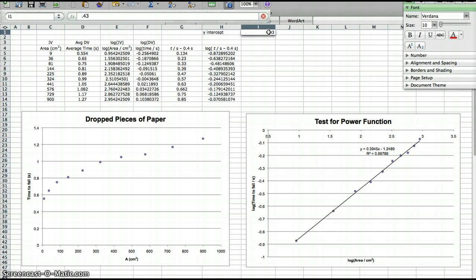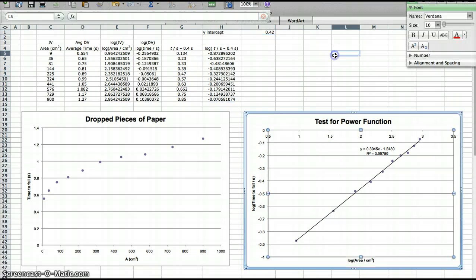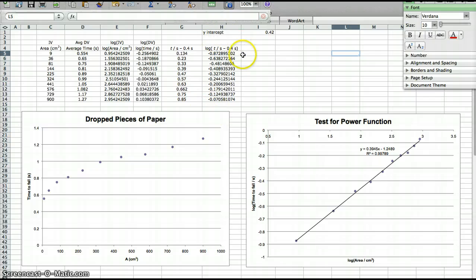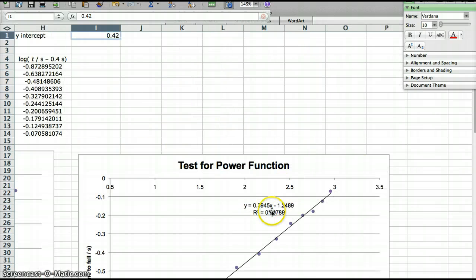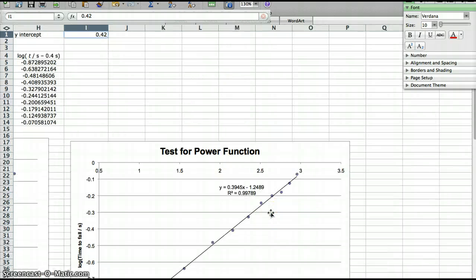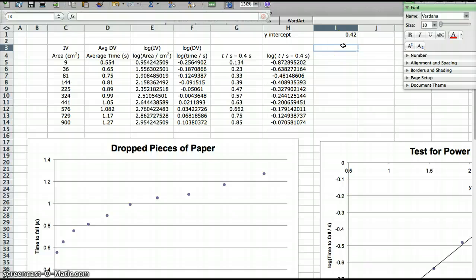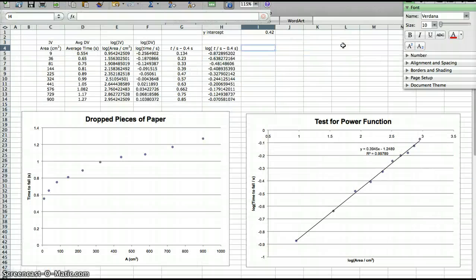Maybe I think it's 0.43. Let's see. 0.43. Sometimes you have to click on the graph. 0.42. About the same. So I'll go with 0.42. So when I use 0.42 as my y-intercept, the slope of the log-log graph is basically 0.4. Can you see it? 0.3945. I'm going to round that up to 0.4. And I'm going to say the power of my power function. The power is 0.4.